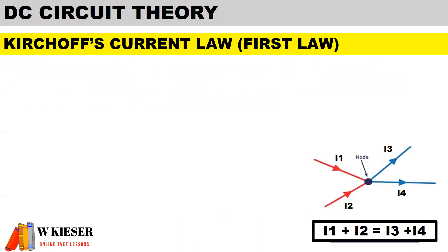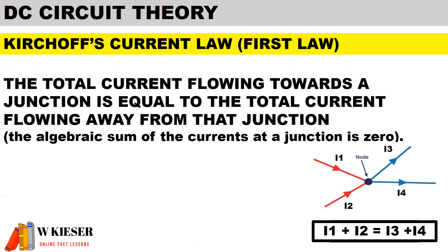For Kirchhoff's Current Law, also known as the first law, the total current flowing towards a junction is equal to the total current flowing away from that junction. In other words, the algebraic sum of the currents at a junction is equal to zero.